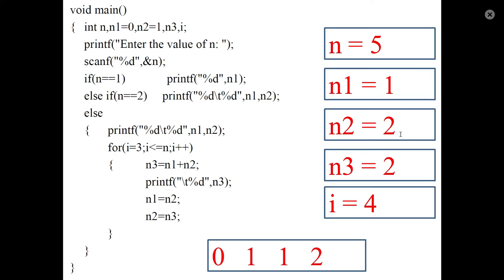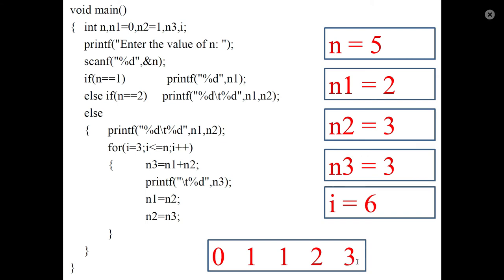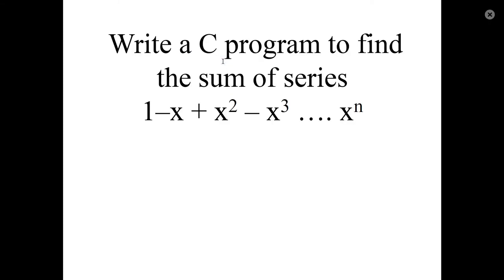Update N1 and N2, then increment i. The condition is still true, so calculate N3 as 1 plus 2 which equals 3, then print 3. Update N1 and N2 again, increment i. Now the condition is false, so we exit the for loop. The first 5 Fibonacci numbers have been displayed.